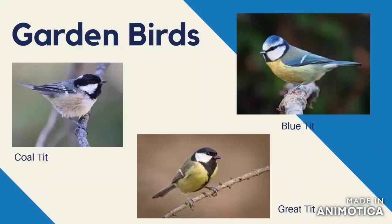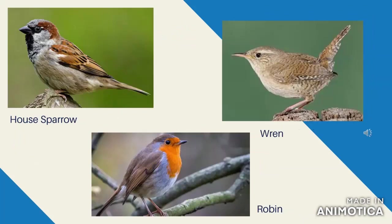Garden birds are also prey species for larger predators, unfortunately including domestic cats. Some common species you'll have seen are the coal tit, blue tit, and great tit. You can put bird feeders out to attract more of them into your garden — just make sure the feeder is kept away from any walls or trees that a cat could climb. Other species include the house sparrow, the wren, and the robin.